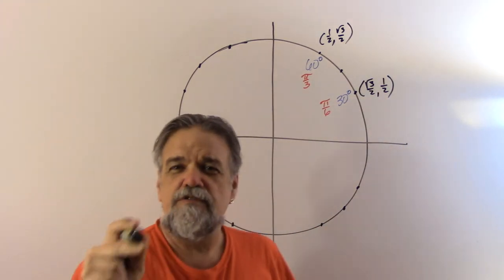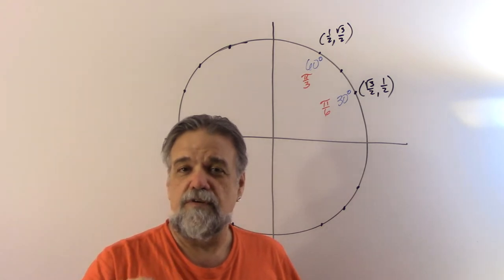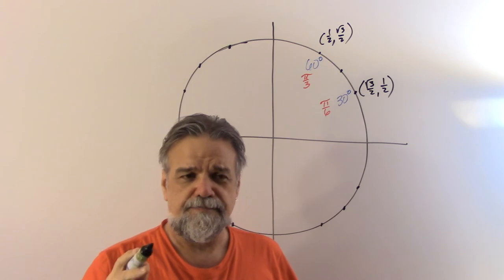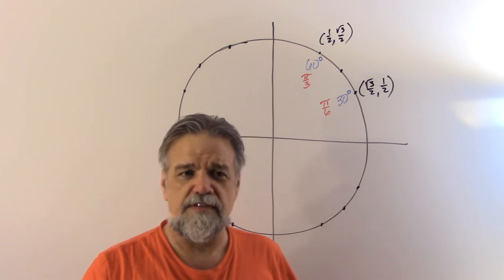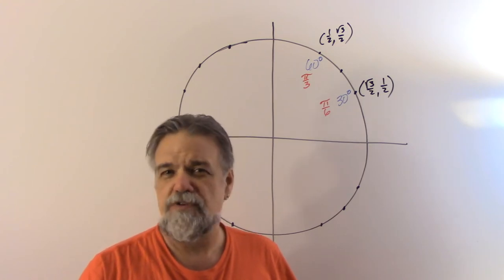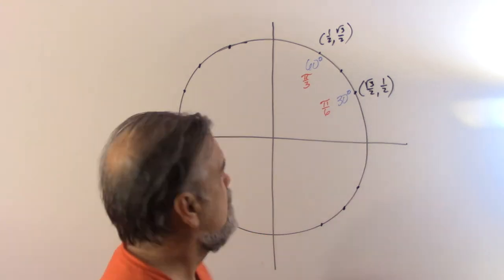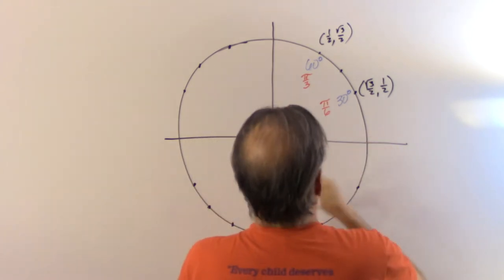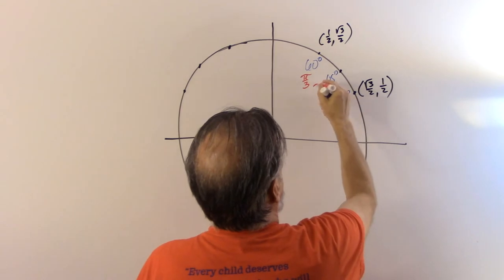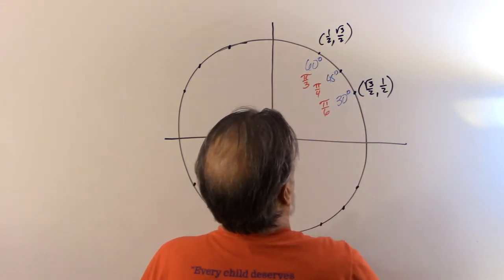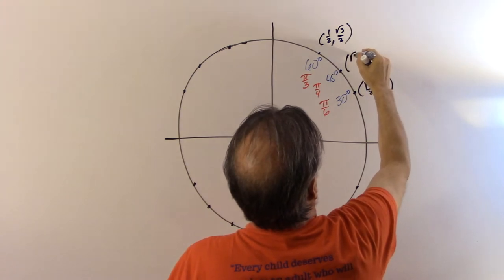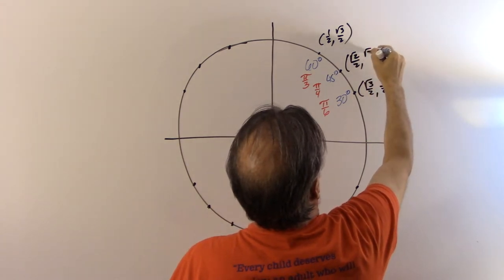There's another special triangle that we looked at — the 45-45-90 triangle. If you remember that, we found that the sine and the cosine were both 1 divided by √2, which we usually write as √2/2. So the angle is 45 degrees, which is the same thing as π/4, and the coordinates are (√2/2, √2/2).